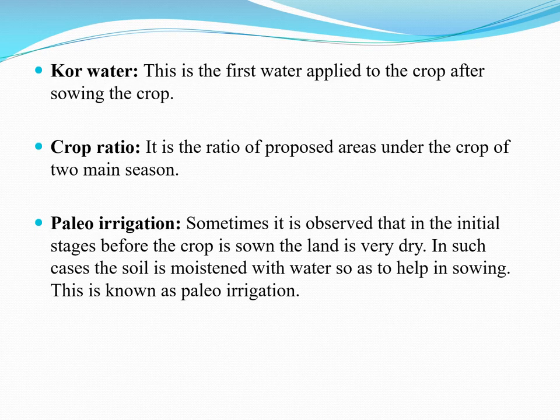Next is core water. Core water is the first water applied to the crop after sowing. This water must be applied within a fixed limited period, and this period is called the core period. The depth of water applied for this core water is called the core depth.